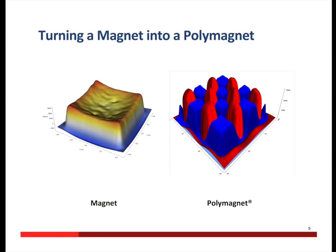On the right is a field scan of a polymagnet where north is red and blue is south. This field scan shows us that this polymagnet has a checkerboard pattern of north and south on it. That contrasts with a standard field coming off of a standard magnet on the left — a conventional magnet with one north and south. Conventional magnets are limited in their function because they're limited to a conventional field.